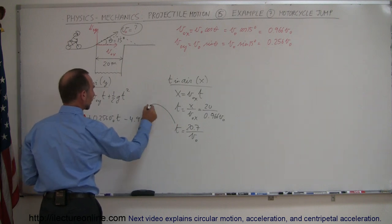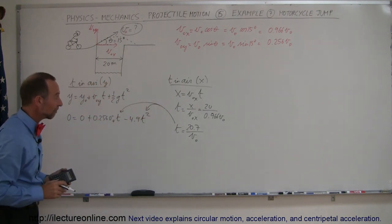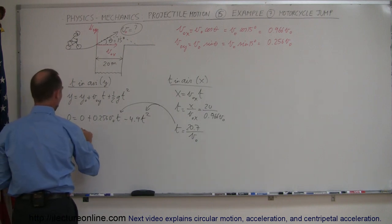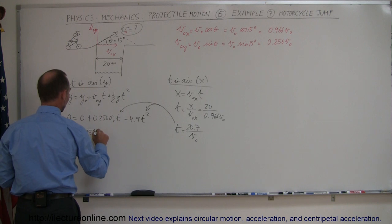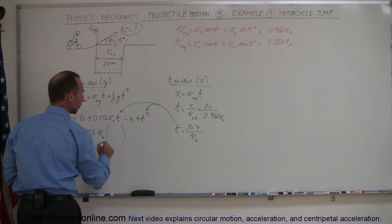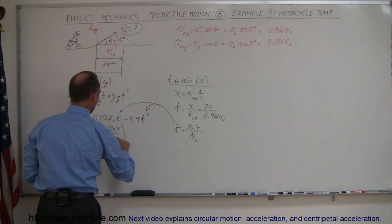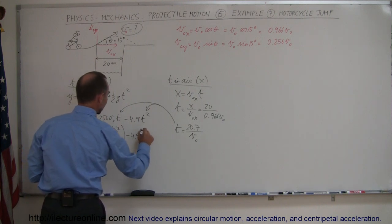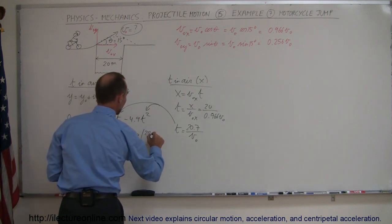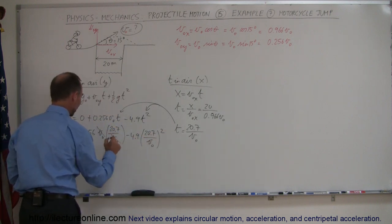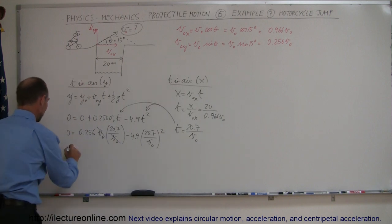All right so we have 0 equals 0.256 v initial times 20.7 divided by v initial minus 4.9 times 20.7 divided by v initial quantity squared. Notice here the v initials cancel out and simplifying this a little bit more we get 0 is equal to 0.256 times 20.7 so we get 5.3.